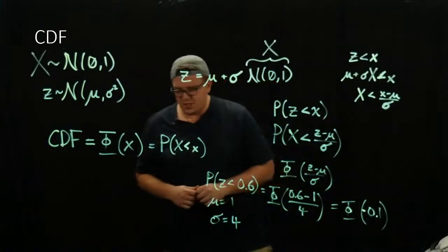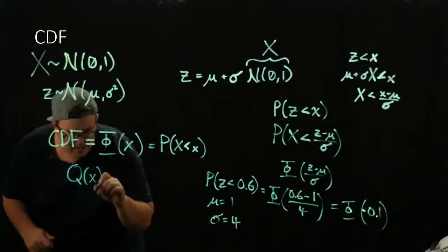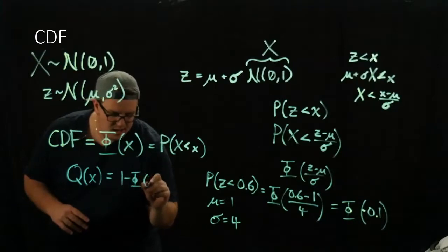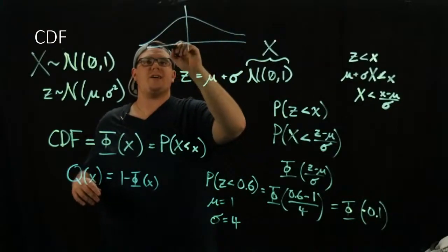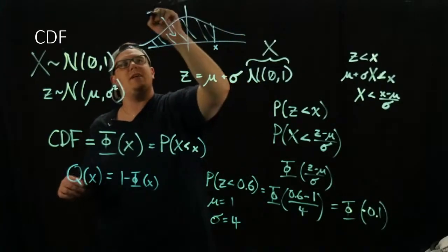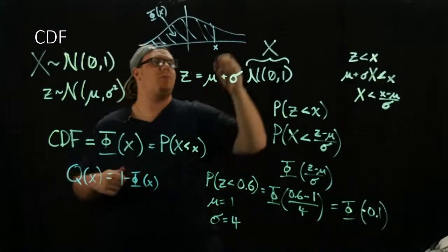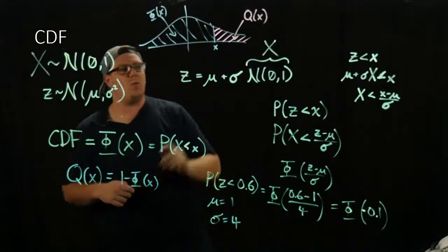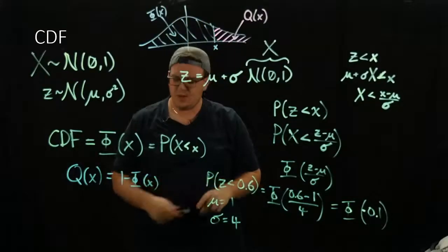The last thing to mention is that instead of using Φ, we sometimes use Q. If you see something called Q(x), this is called the tail probability, and basically it is 1 minus Φ(x). So where Φ(x) integrates from negative infinity up to x, Q(x) gives you the area in the tail — everything above x. The Q function is 1 minus Φ(x), because the total integral over the entire Gaussian is 1.